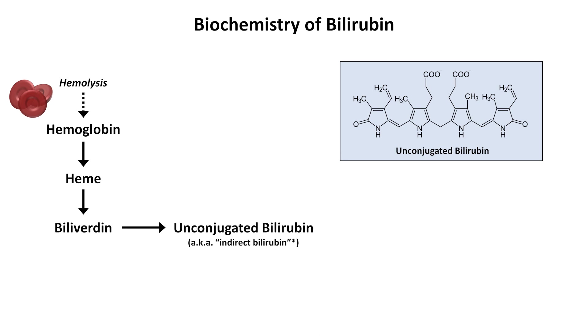Unconjugated bilirubin is transported to the liver in the blood, some of which is non-covalently bound to albumin. Once in the liver, it undergoes a process called conjugation, in which two molecules of glucuronic acid are covalently bound to it. This is an important step because conjugated bilirubin is much more soluble than the unconjugated form.